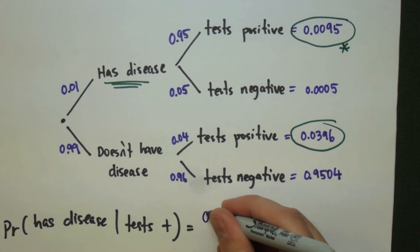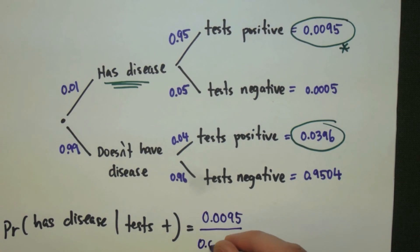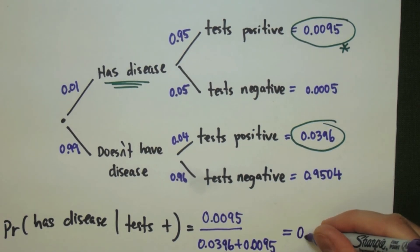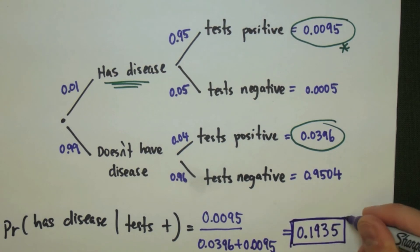So we put everything together. We get 0.0095 as our numerator and our denominator is 0.0396 plus 0.0095. If we do the computation, what we end up with is 0.1935 or about a 19% chance that we actually have the disease given that we tested positive.